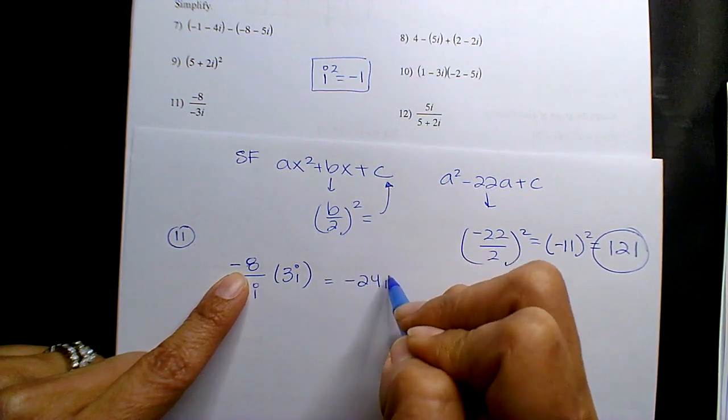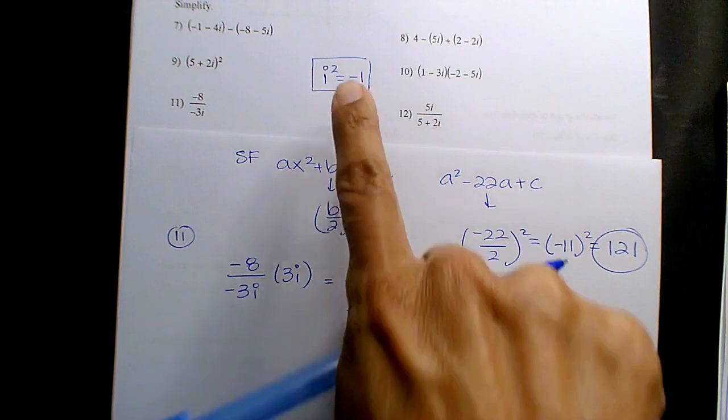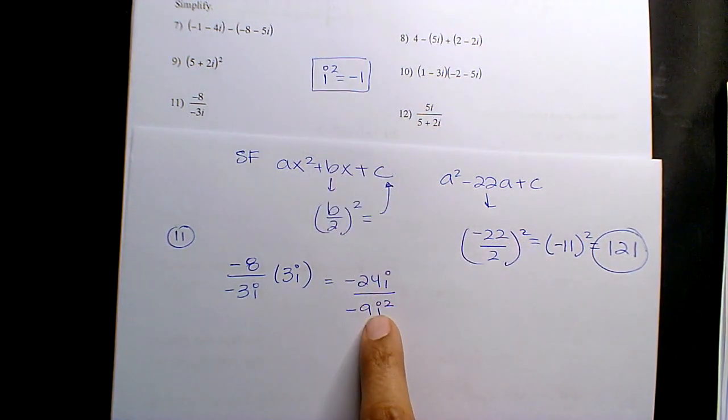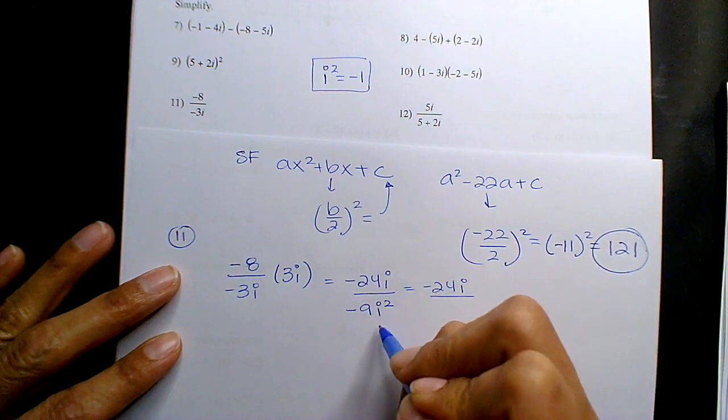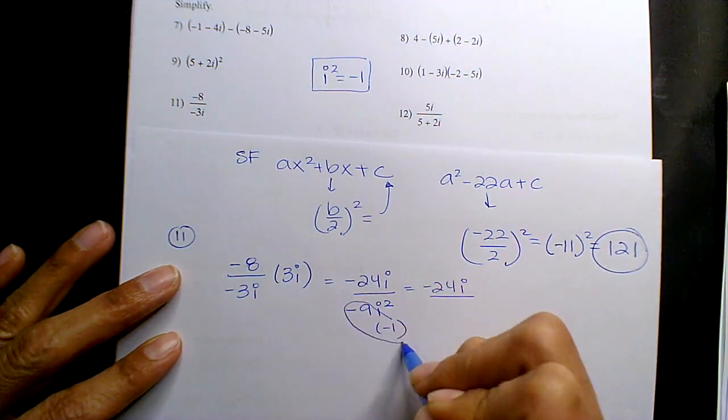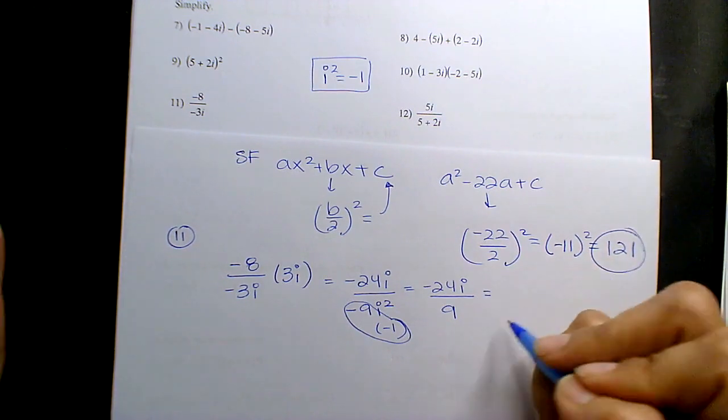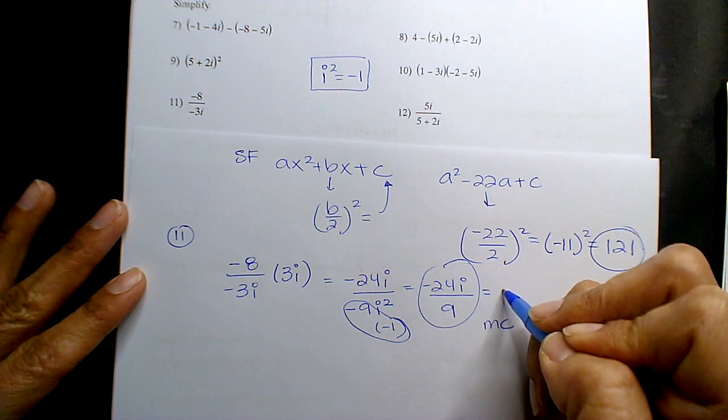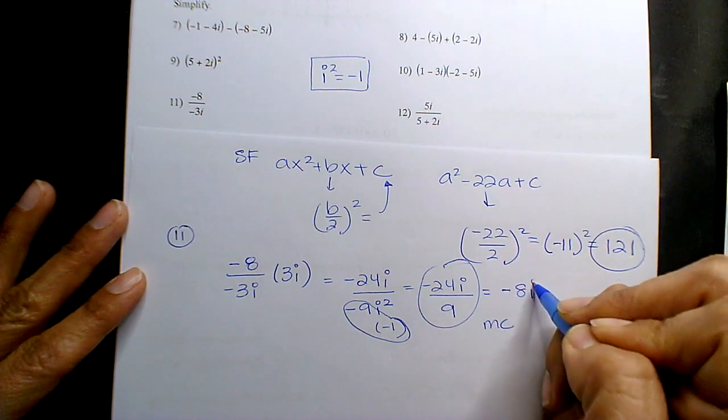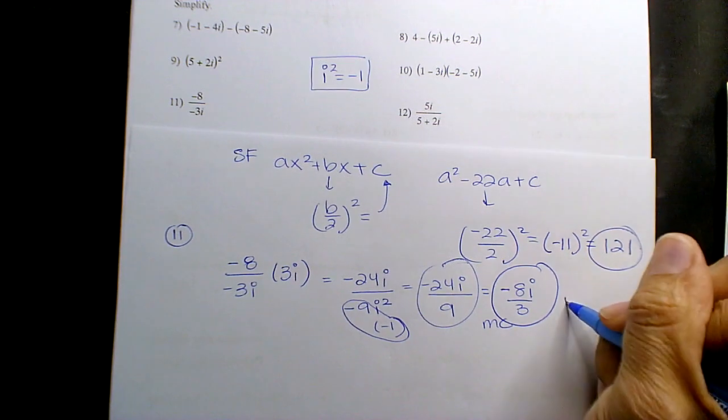So now multiply. Negative 24i. Negative 9i squared. But i squared is equal to negative 1. So this becomes positive 9. And if you're going to reduce, because it's multiple choice, that's not going to be an option. Negative 8i over 3. And this will be your answer. This is your winner.